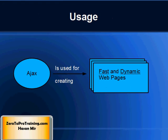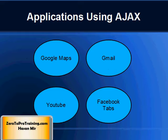Ajax is a technique used for creating fast and dynamic web pages. Examples of applications using Ajax are Google Maps, Gmail, YouTube, and Facebook tabs.